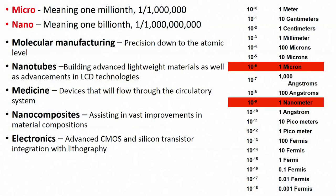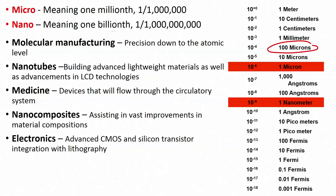If you see the screen, we are talking about 10 raised to minus 6, which is about 1 micron, to 10 raised to minus 9, which is about 1 nanometer. The average human hair thickness is about 100 microns, but we are talking about 1 micron — in fact, 1 nanometer. Micro means 1 millionth, and nano means 1 billionth. These are extremely small values.